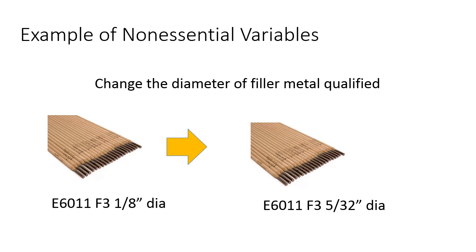Non-essential variables are important and need to be addressed, but it just means that if you change a non-essential variable, you don't have to go back and requalify the procedure. We haven't changed filler materials — we've just changed the size, like buying soda in a 12-ounce can versus a 2-liter bottle. Same product, same end result, just done faster. But if we change from E6011, which is an F3, to an E7018, which is an F4 material, that's a change in F number and we have to go back and requalify the weld procedure. Changing only the diameter has no impact on the metallurgical qualities of that weld.